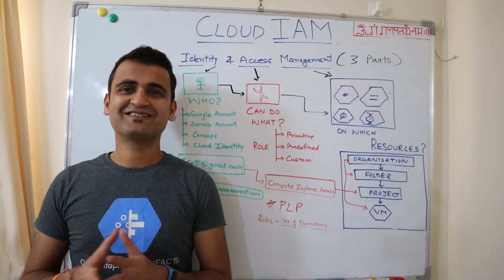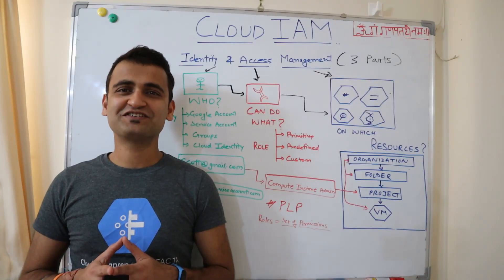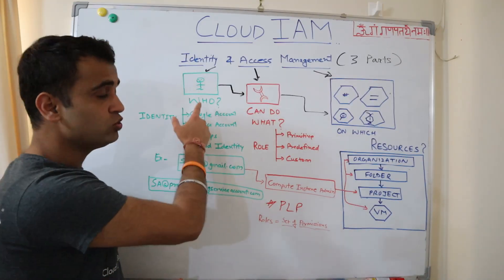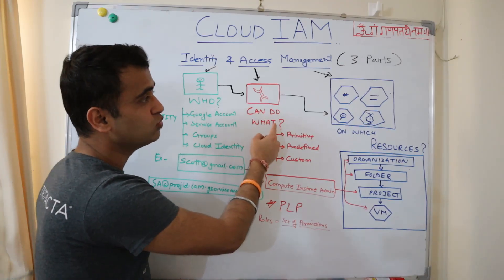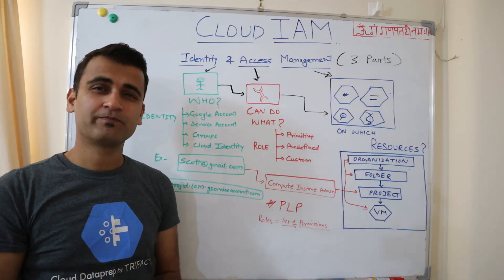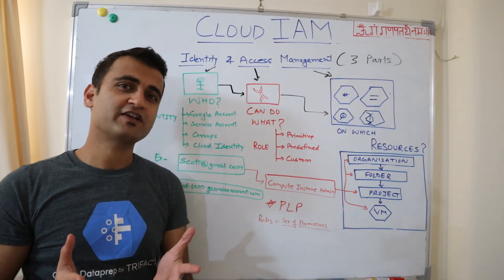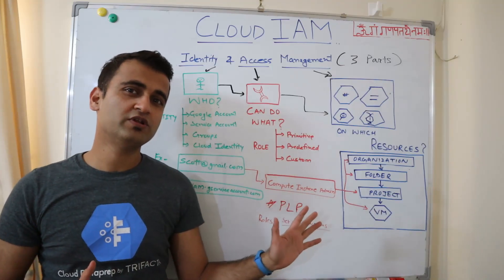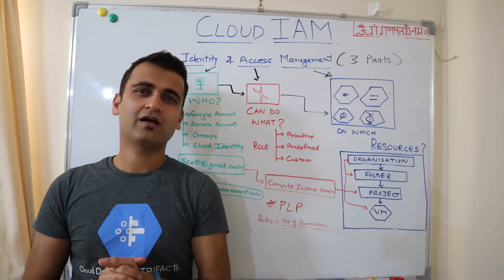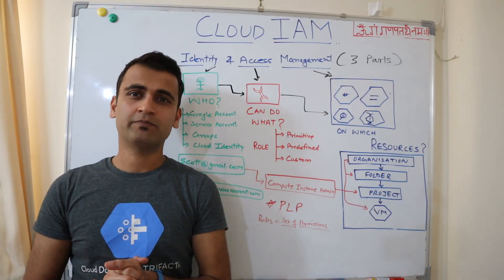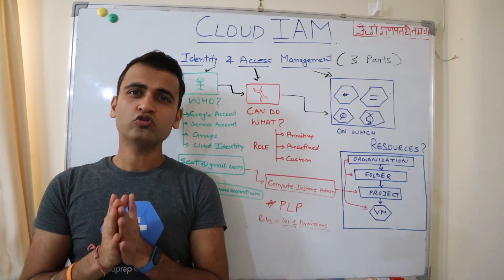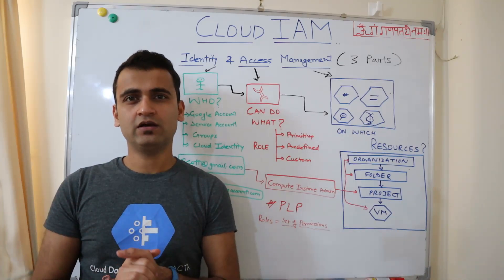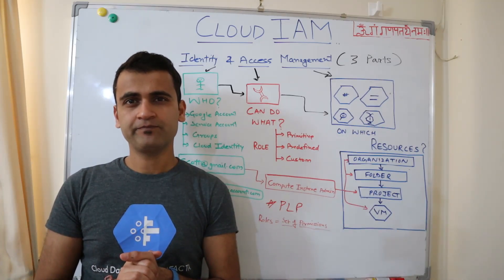Identity and access management has three major parts: who can do what on which resources? This is self-explanatory, but before we go into the details, let's take a real-life example. Suppose you go for a walk-in interview in any company.